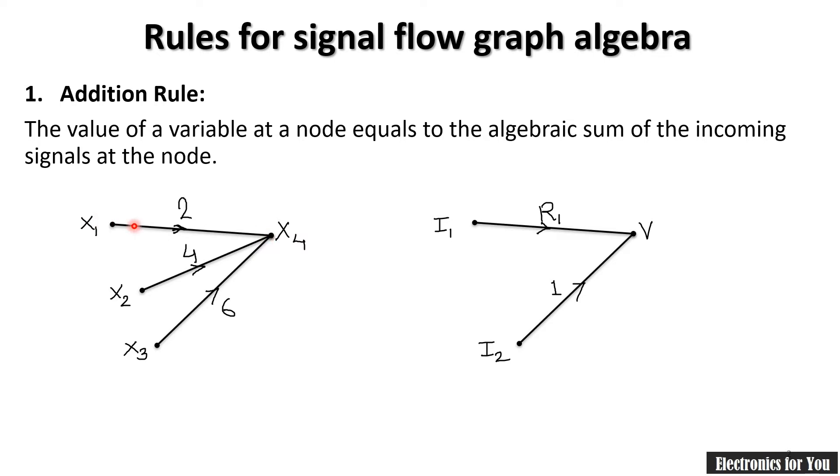As you can see here, this is your x4 which is an output node because all the signals are incoming here. Therefore the system equation will be x4 equal to the gain for this.